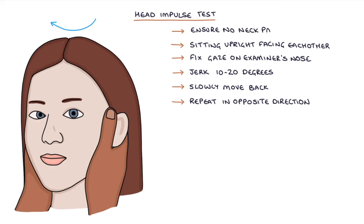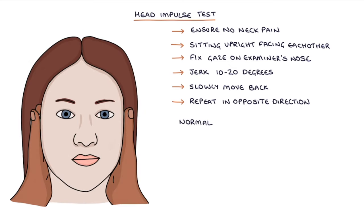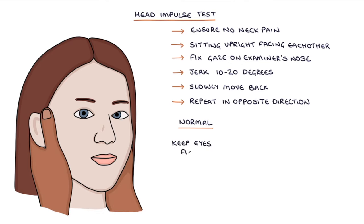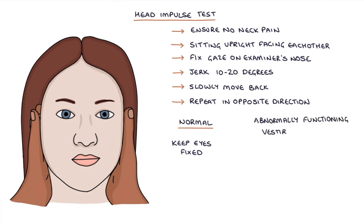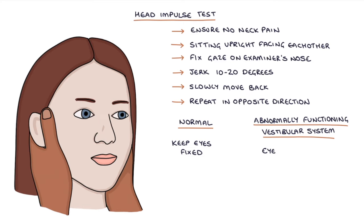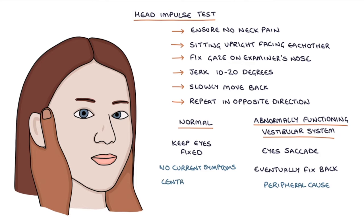It's important to ensure the patient has no neck pain or pathology before performing the test. A patient with a normally functioning vestibular system will keep their eyes fixed on the examiner's nose. In a patient with an abnormally functioning vestibular system — for example with vestibular neuronitis or labyrinthitis — the eyes will saccade, meaning they rapidly move side to side as they eventually fix back on the examiner's nose. The head impulse test helps diagnose a peripheral cause of vertigo; it will be normal if the patient has no current symptoms or a central cause of vertigo.